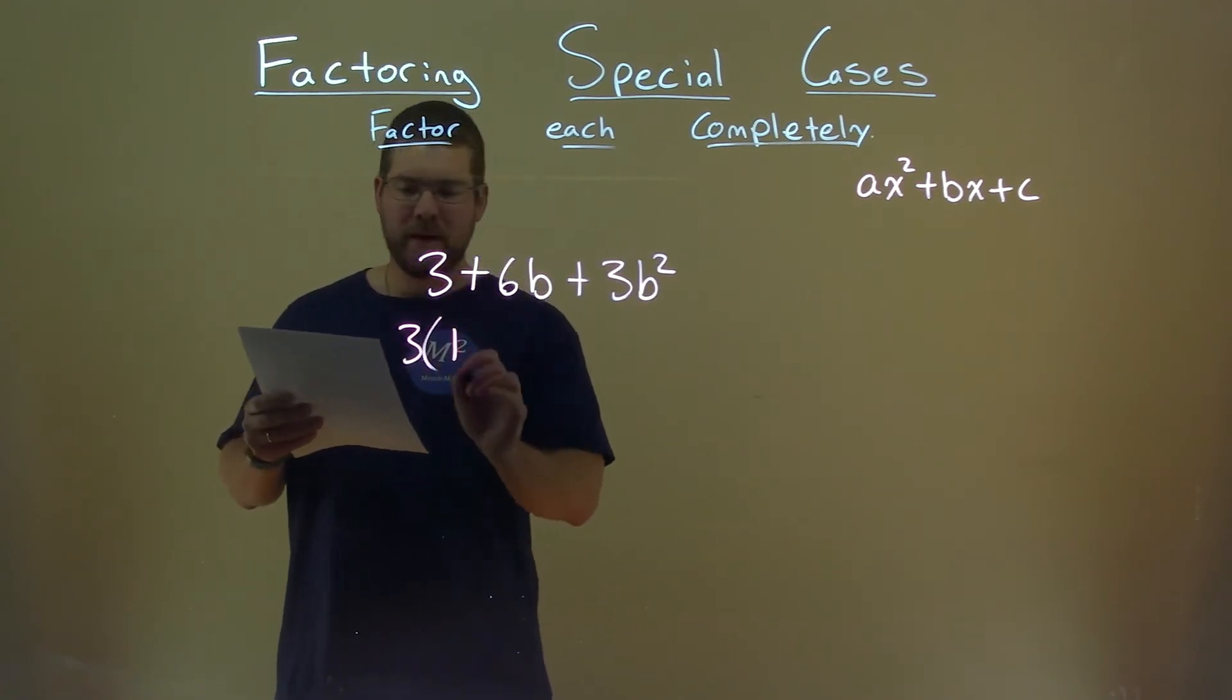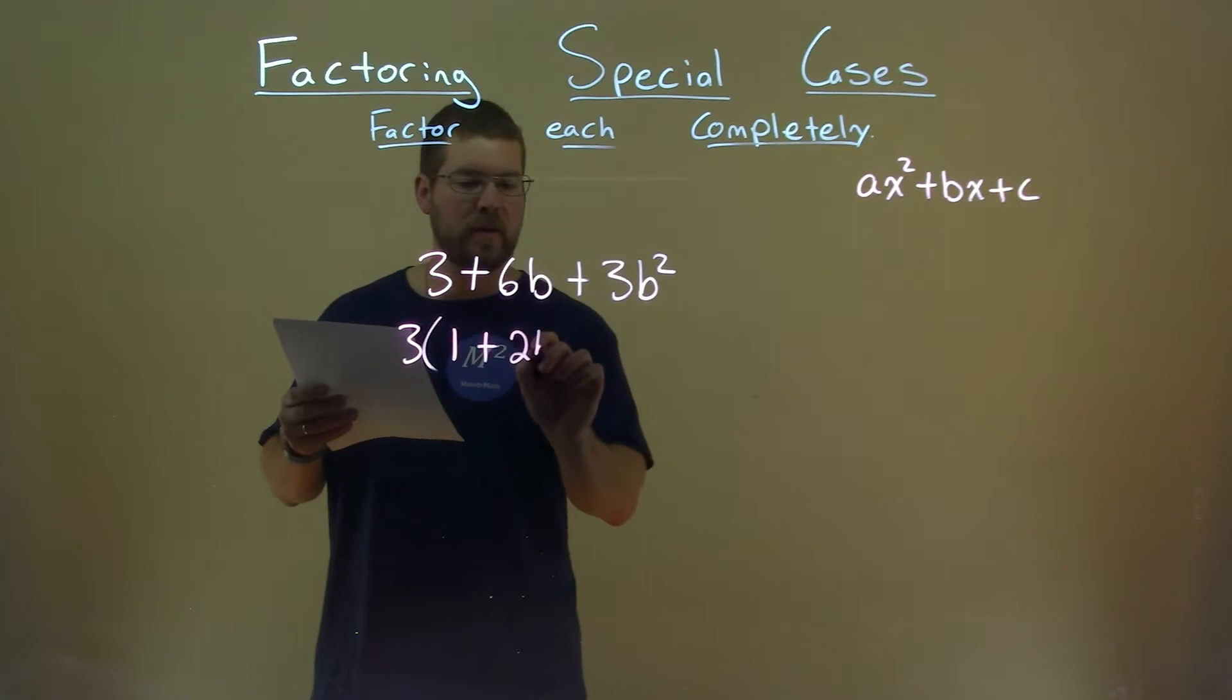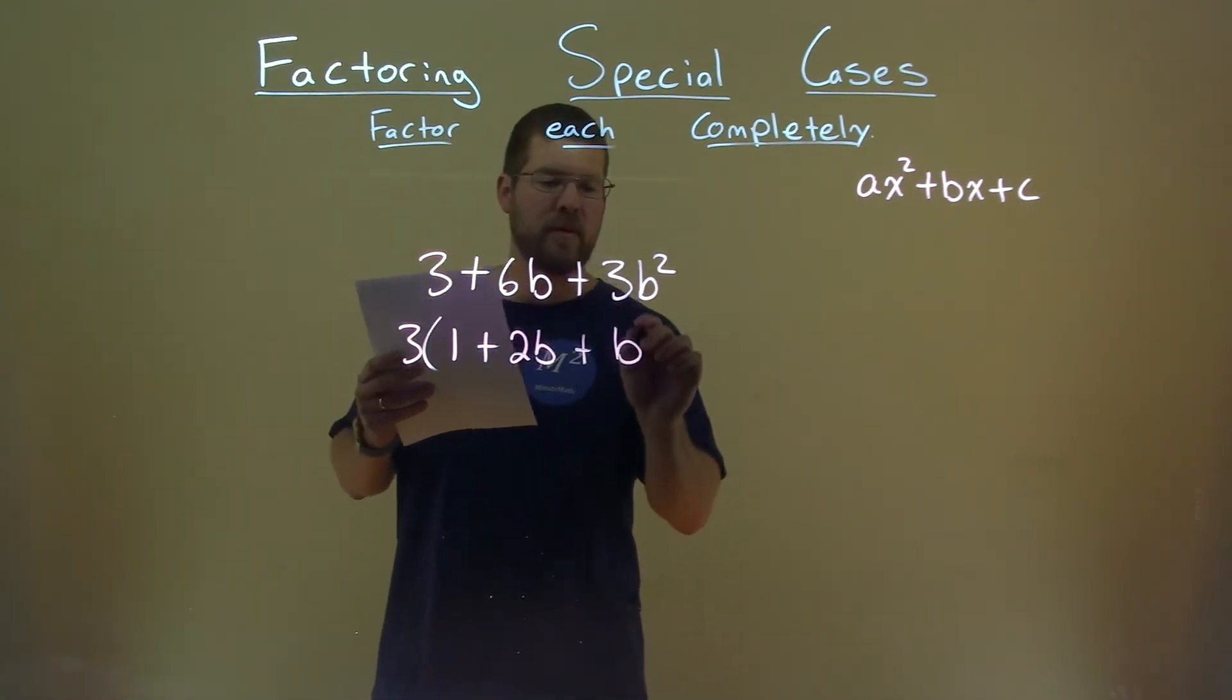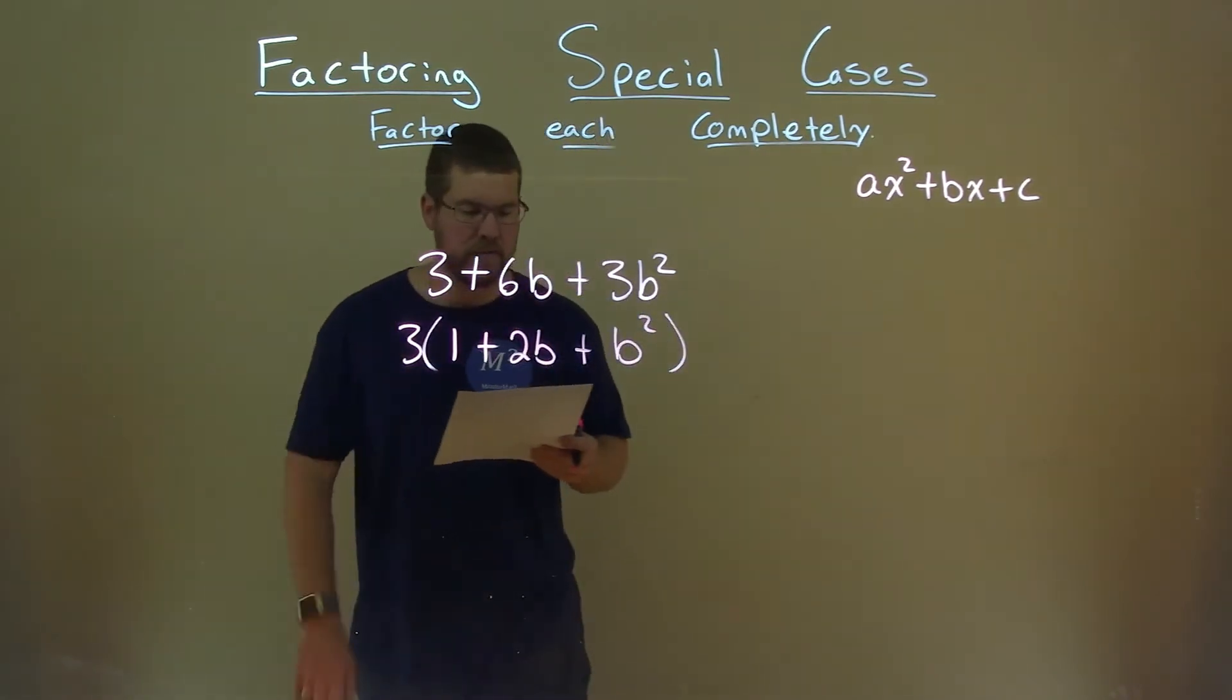Pull 3 out of 3, we get a 1. This becomes a 2b from the 6, and the 3b squared becomes just b squared, a little easier to factor now.